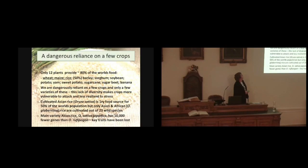It's kind of worse than that because we don't actually eat many varieties of those particular plants. Cultivated Asian rice, Oryza sativa, is the primary food source for 50% of the world's population but we only actually cultivate two of the potential 23 species. And this main variety, this so-called elite variety, Oryza sativa japonica, we've bred it to such an extent that it's ended up with about 10,000 fewer genes than its wild relative Oryza rufipogon. So we've thrown a lot of babies out with the bathwater.